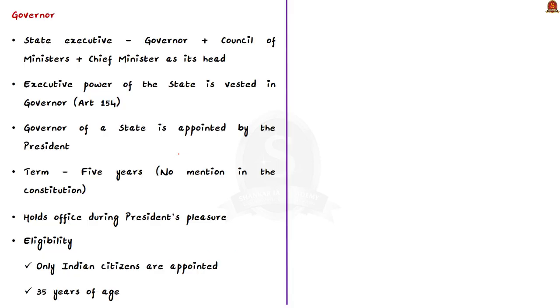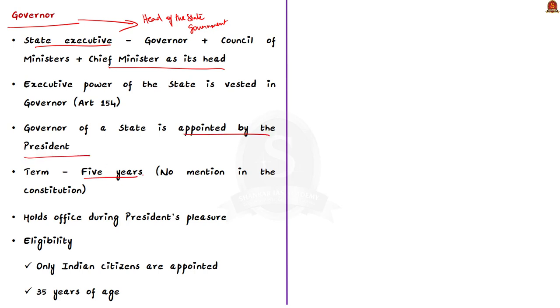Moving to the next news article: 'Gehlot sworn in as Karnataka Governor.' The former union minister Thawarchand Gehlot took oath as the 19th Governor of Karnataka. The state executive organ consists of the governor and the council of ministers with the chief minister as its head. The executive power of the state is vested in the governor under Article 154, which is why the governor is called the head of the state and the chief minister as the head of the government. The governor is appointed by the president generally for a term of five years, though the tenure finds no mention in the Constitution. The governor holds office during the pleasure of the president.